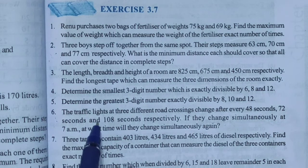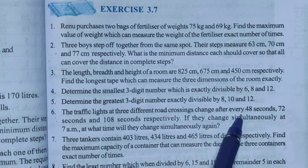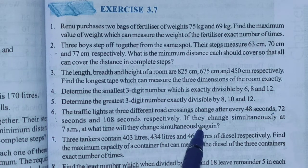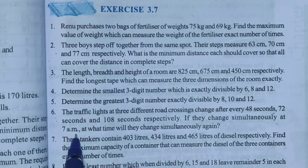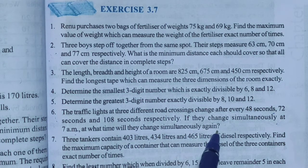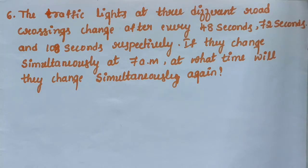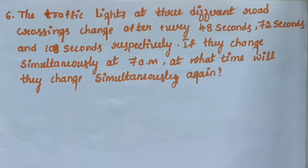Next coming to question number 6. The traffic lights at 3 different road crossings change after every 48 seconds, 72 seconds and 108 seconds respectively. If they change simultaneously at 7 am, at what time will they change simultaneously again? Find the LCM of 48, 72 and 108 seconds.